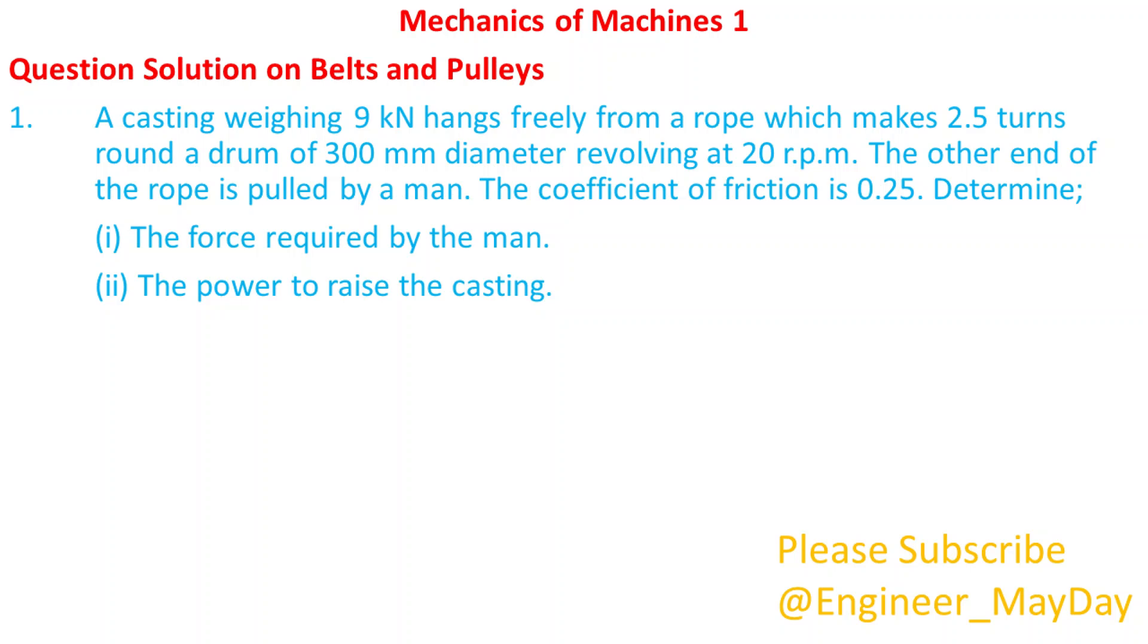Let's begin with this question. A casting weighing 9 kN hangs freely from a rope which makes 2.5 turns round a drum of 300 mm diameter revolving at 20 rpm. The other end of the rope is pulled by a man. The coefficient of friction is 0.25.